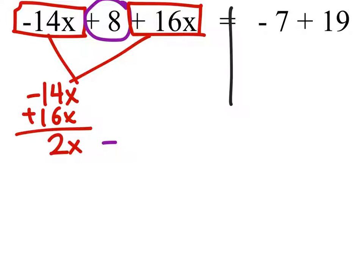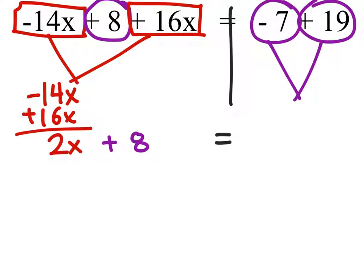Now we didn't do anything with the 8, so I still have that plus 8. The line represents the equal sign. And notice these other two terms, negative 7 and plus 19, are just constants. They don't have an x value. So I can combine these two on the right side of the equal sign.